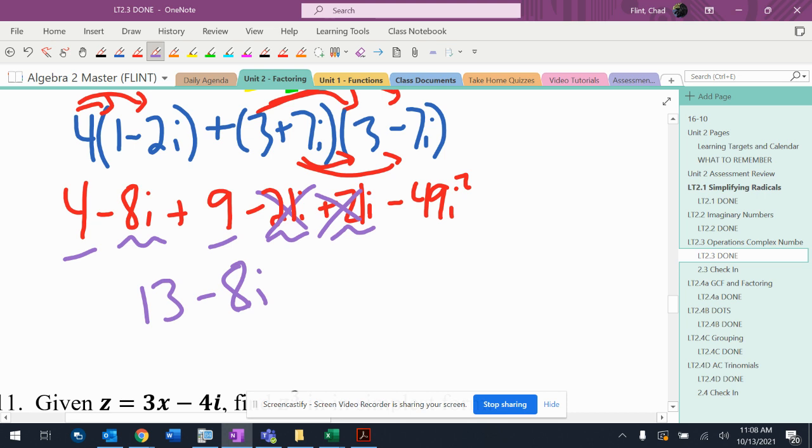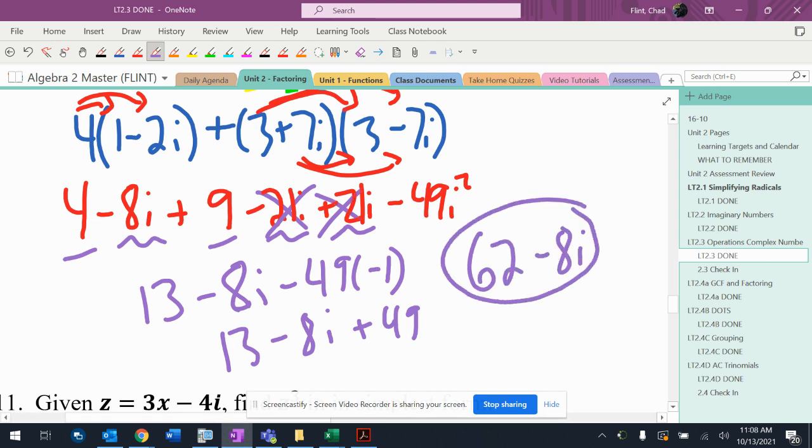And this is -49 times -1, so that's plus 49. 13 minus 8i plus 49, that's going to end up being 62 - 8i.